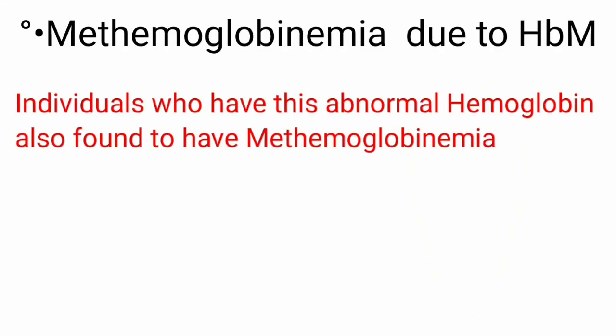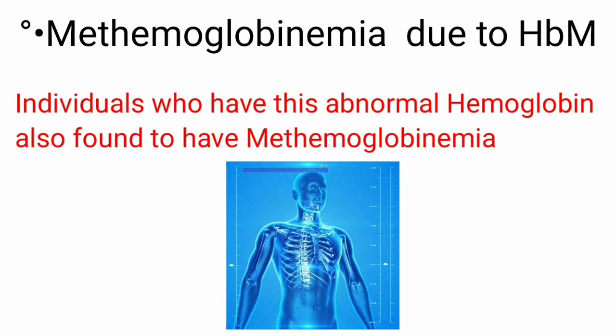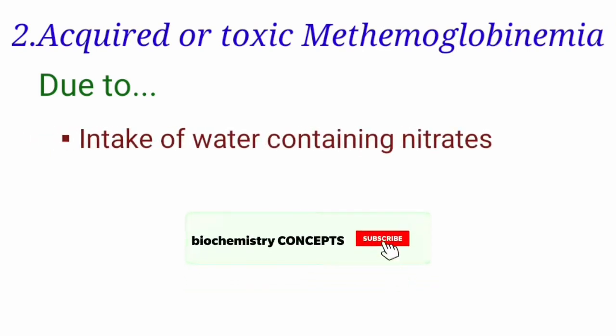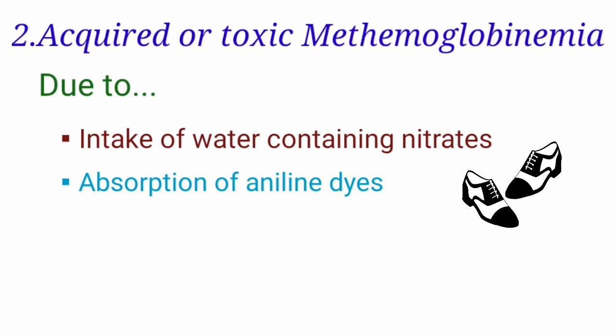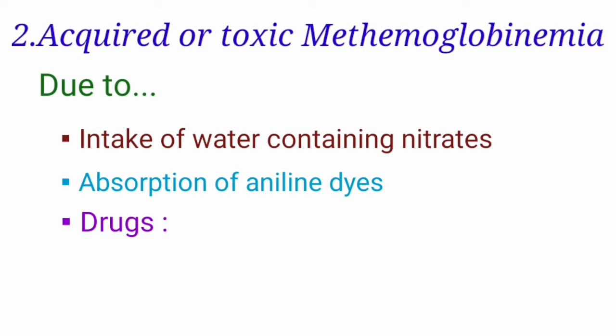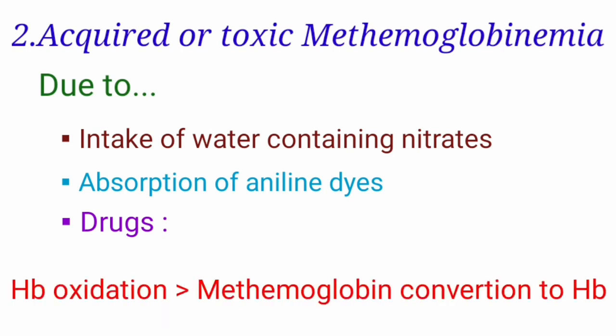Individuals who have the abnormal type of hemoglobin HbM are also found to have methemoglobinemia. Coming to the second type — acquired or toxic methemoglobinemia — it is due to intake of water containing nitrates or absorption of aniline dyes. Aniline is used in the manufacture of shoe dyes, floor polishes, cosmetics, and explosives, and aniline dye workers have been known to develop methemoglobinemia. Acquired methemoglobinemia also results from exposure to oxidant chemicals, including a range of both prescribed and over-the-counter drugs. It occurs when the rate of hemoglobin oxidation to methemoglobin due to oxidant exposure exceeds the rate at which methemoglobin can be reduced by cytochrome B5 reductase.